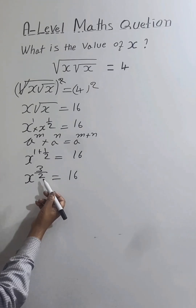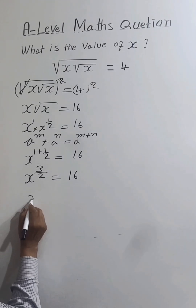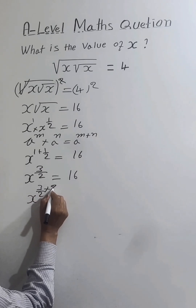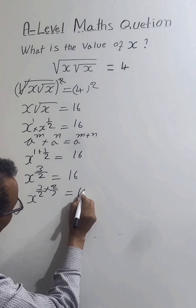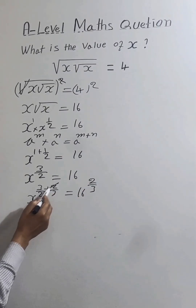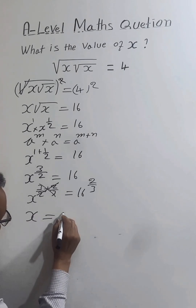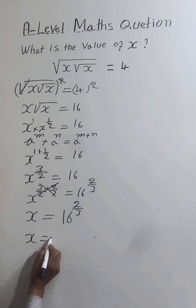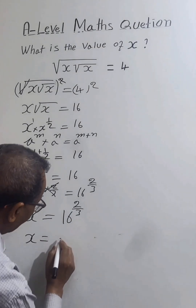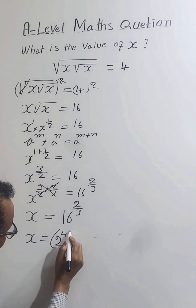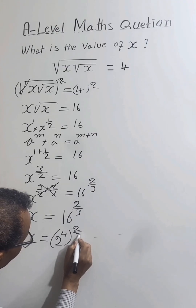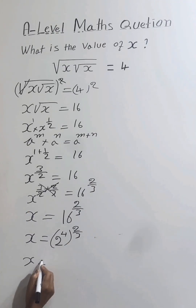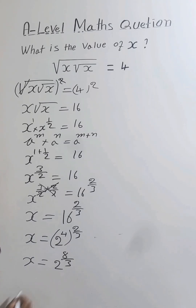So let's raise both sides by the reciprocal of this power, which is 2 over 3. So x to the power 3 over 2 times 2 over 3 equals 16 to the power 2 over 3. This will be cancelled, leaving x. So x equals 16 to the power 2 over 3, which is 2 to the power 4, giving us 2 to the power 8 over 3.